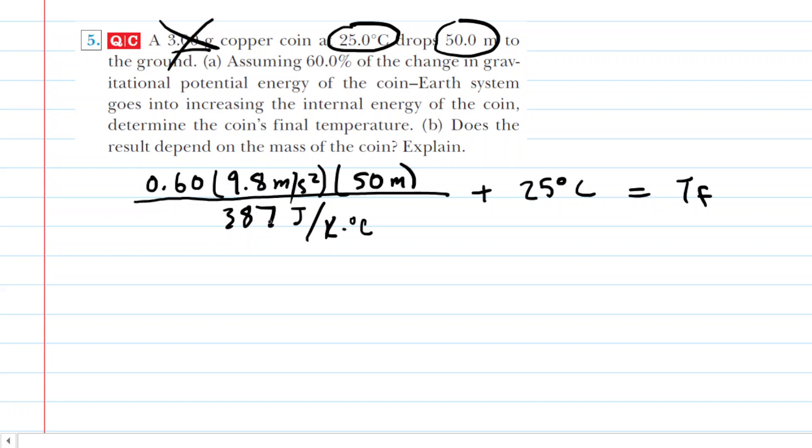We've looked up that value as 387 joules per kilogram degree Celsius. Plugging everything in, we get approximately 25.8 degrees Celsius. This is the final temperature of the coin and the answer to part A.